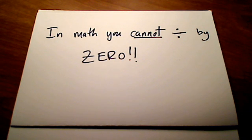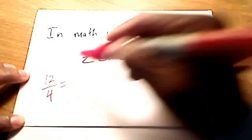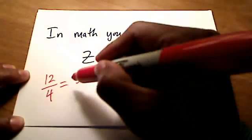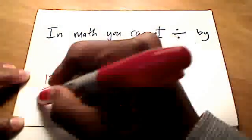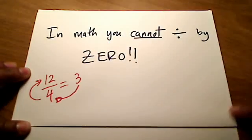Let me show you something real quick. Everybody knows that 12 divided by 4 is 3. Why? Well, if you multiply 3 times 4, you get 12, right? Does that make sense?